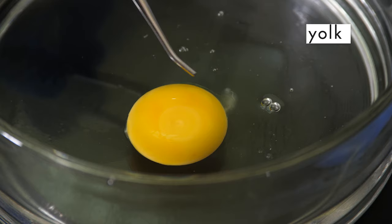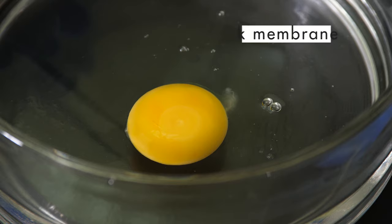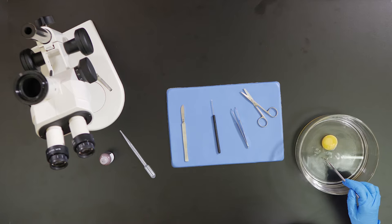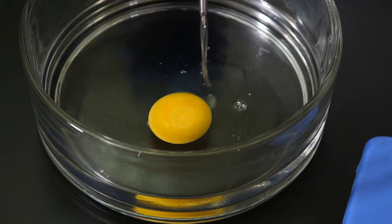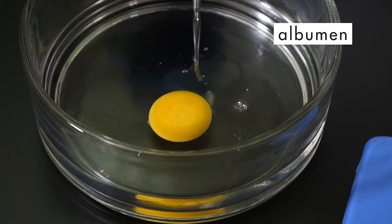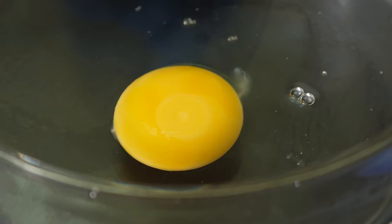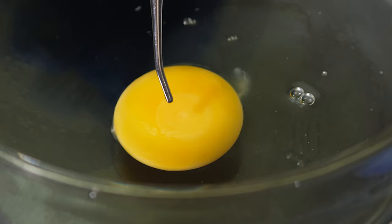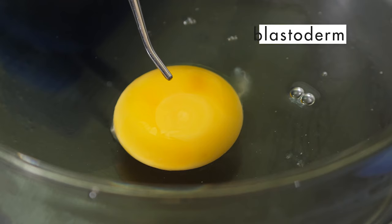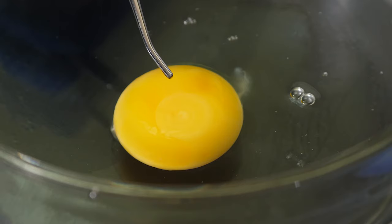The yellow part of the egg is called the yolk. The yolk is contained in a membrane called the yolk membrane. The clear, thick liquid surrounding the yolk is called albumin. Notice the small white circle in the center of the yolk. This is called the blastoderm. The blastoderm is the group of cells that form the chicken embryo.